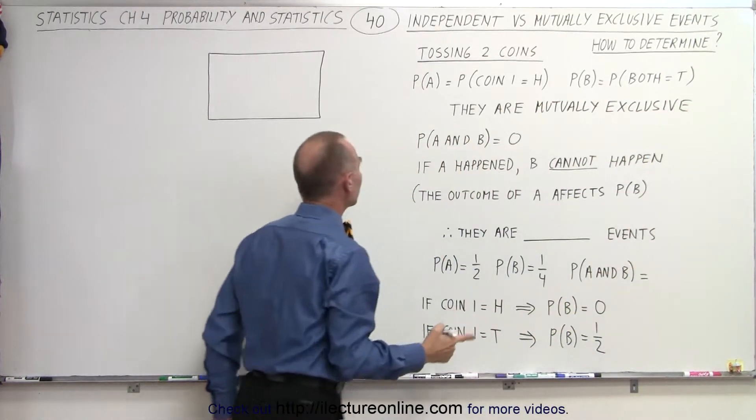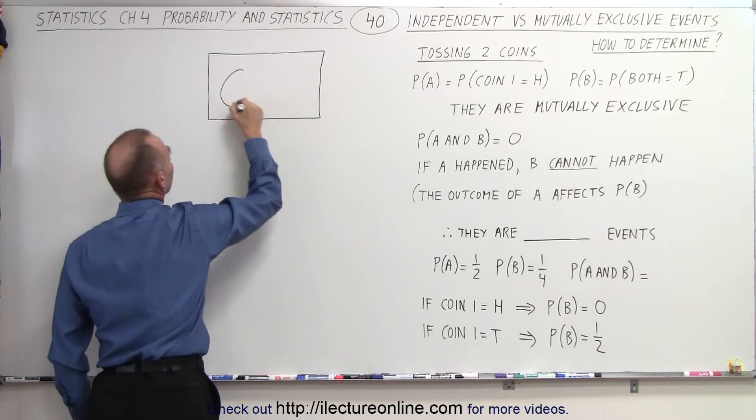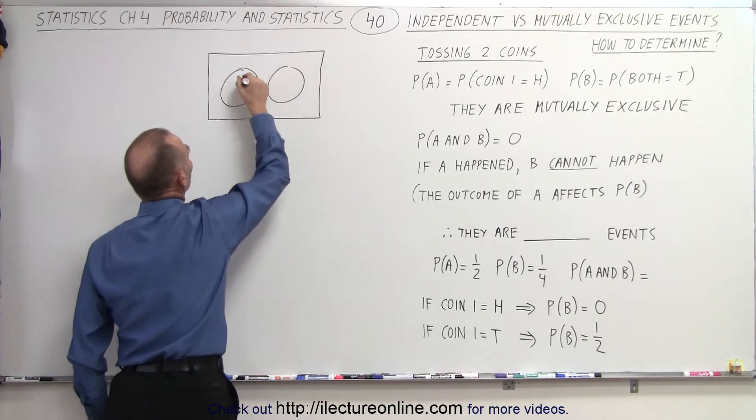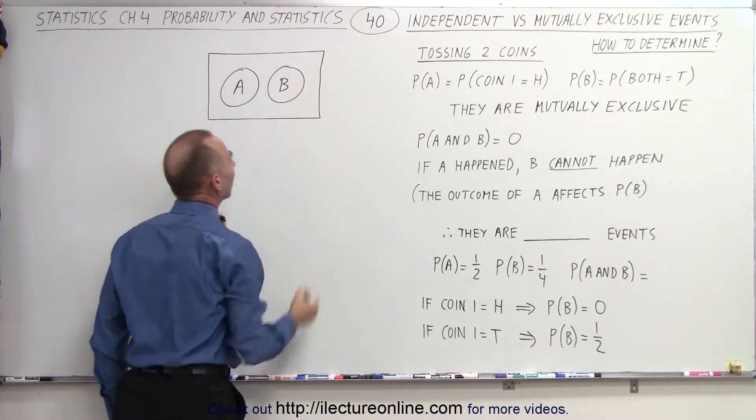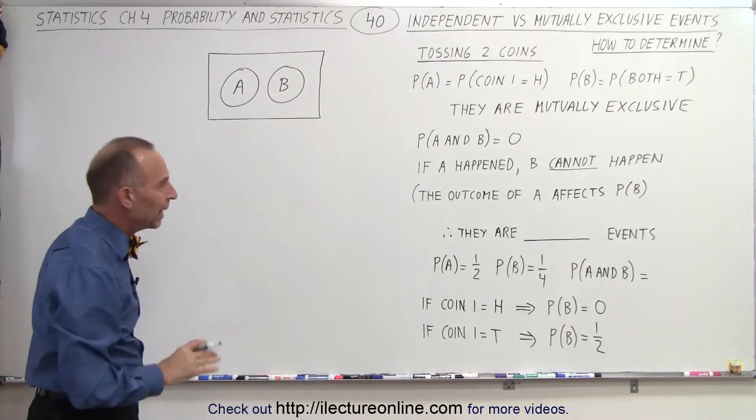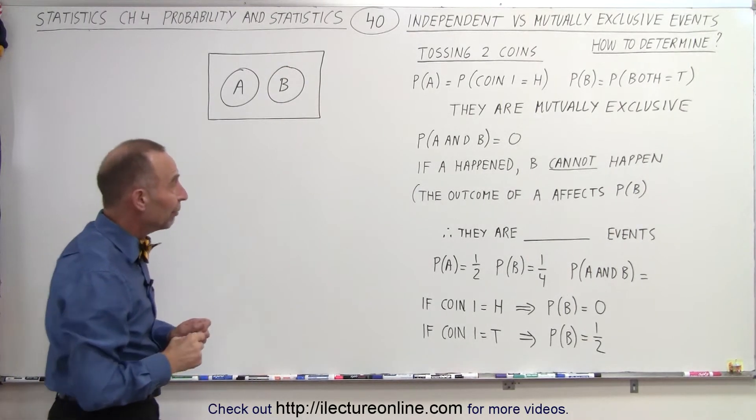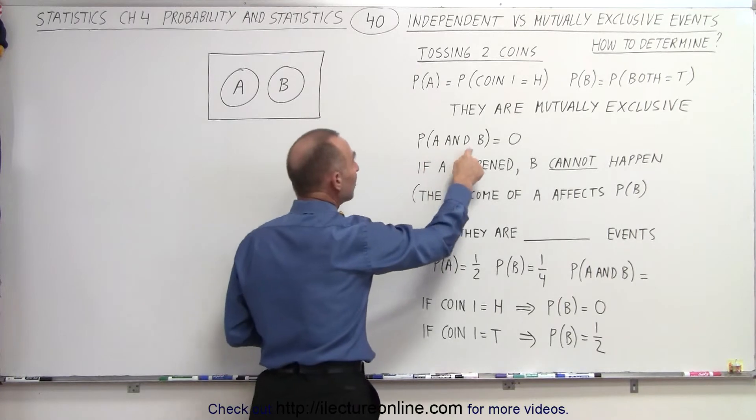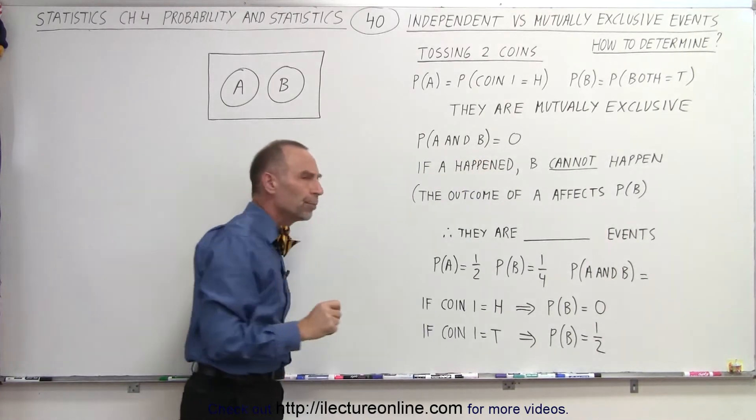And so, if we draw a Venn diagram, then it would look like this. There's no overlap between events A and events B. They cannot happen at the same time, and therefore, the probability of A and B must equal zero.